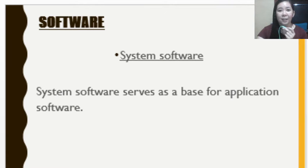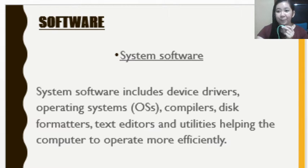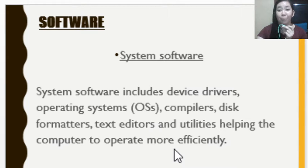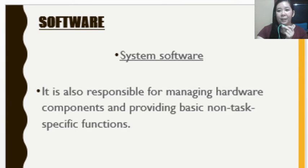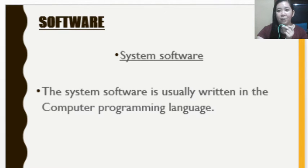Another type is system software. This serves as the base for application software and includes device drivers, operating systems, compilers, disk formatters, text editors, and utilities that help the computer operate more efficiently. System software is also responsible for managing hardware and providing basic non-task-specific functions. It is usually written in a computer programming language.